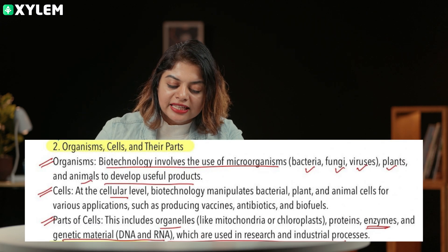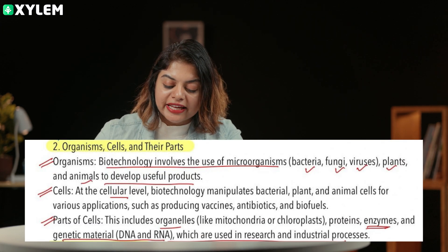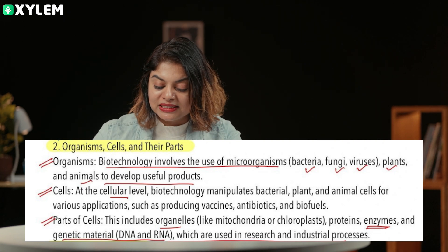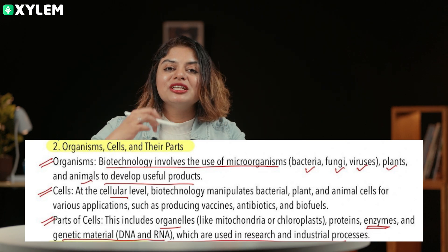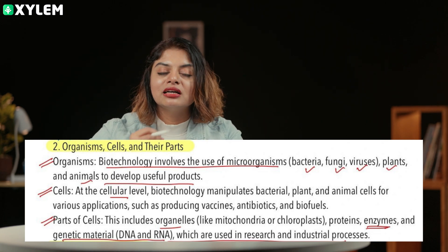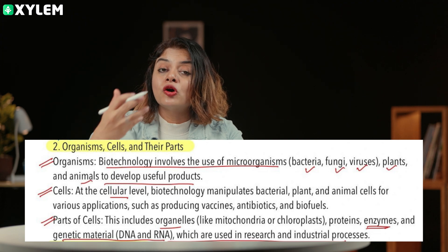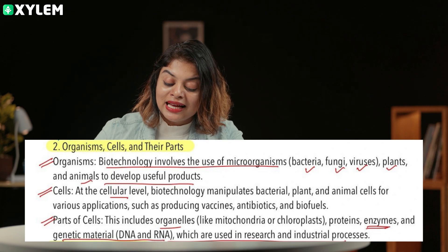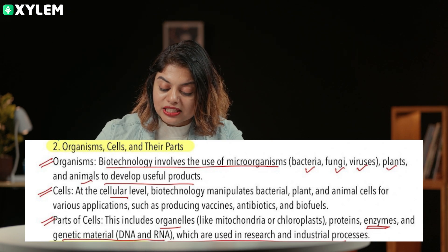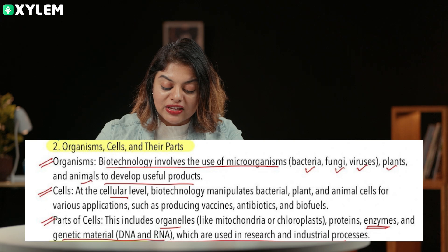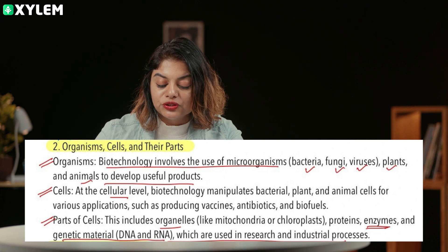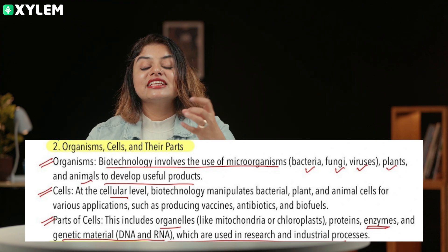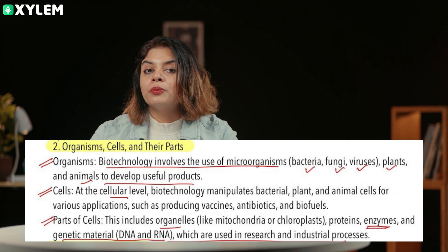The second thing in the biotechnology definition is: organisms, cells and their parts. Biotechnology involves the use of organisms like bacteria, fungi, viruses, plants and animals to develop useful products — including transgenic and genetically modified organisms. At the cellular level, biotechnology manipulates bacterial, plant and animal cells for applications such as producing vaccines, antibiotics and biofuels. At the gene level, it involves DNA and altering it, which is why we have recombinant products.